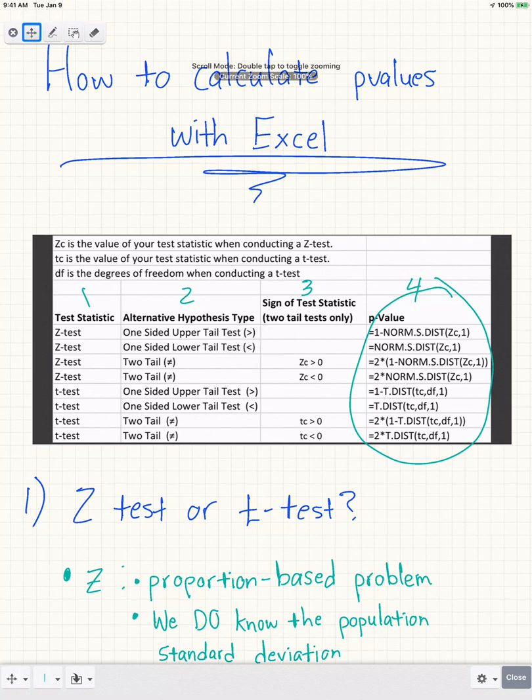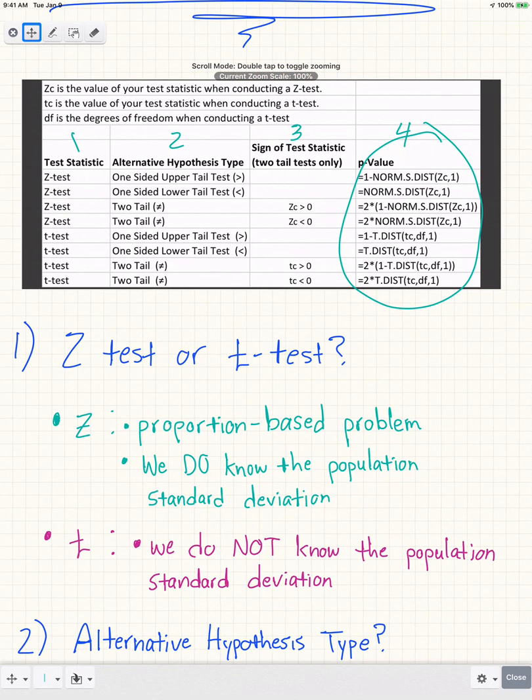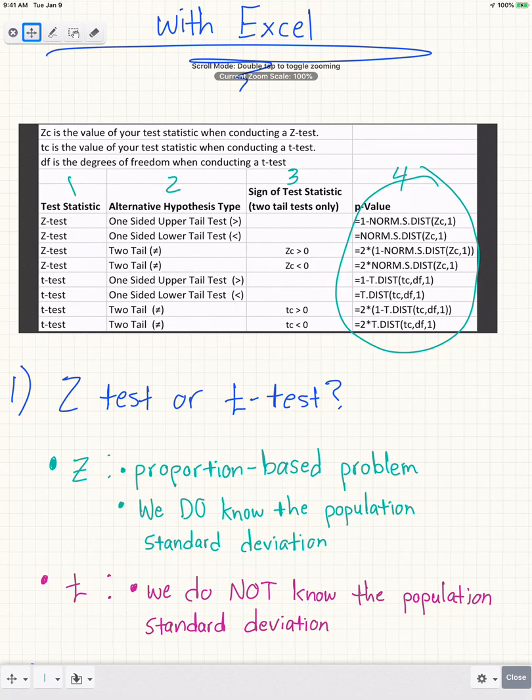To go through each step in the chart, first we ask: is it a Z test or a T test? Based on different statistics classes, I've seen different thresholds used to decide whether it is a Z test or a T test.